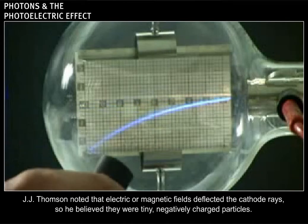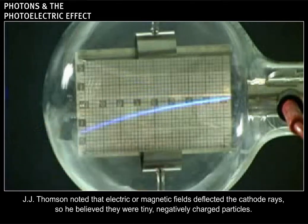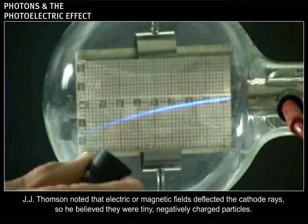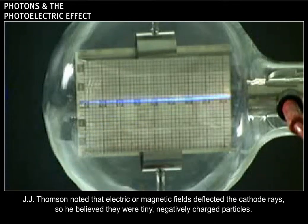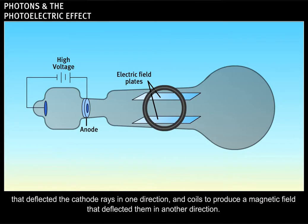J.J. Thompson noted that electric or magnetic fields deflected the cathode rays, so he believed they were tiny, negatively charged particles. To find out more about the rays, he constructed a cathode ray tube with plates to produce an electric field that deflected the cathode rays in one direction and coils to produce a magnetic field that deflected them in another direction.